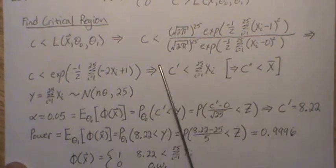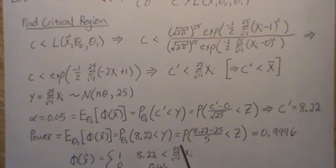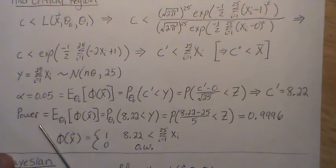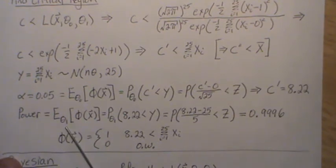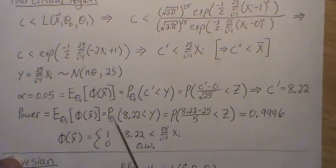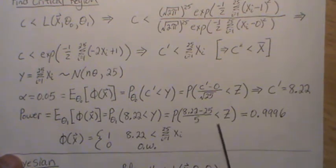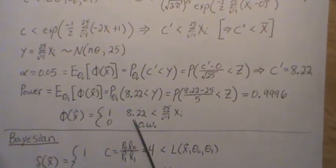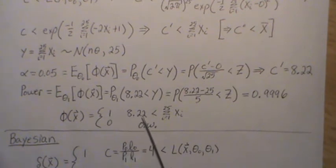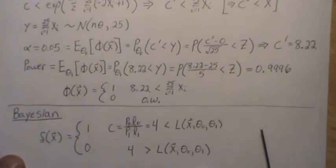Using z equal to 1.645, we can back-solve for C-prime. The rejection region is: if the sum of the x_i's is greater than 8.22, we reject. The power is the expected value of the test function under the alternative hypothesis — the probability that Y exceeds the critical value under the alternative. Standardizing to a z random variable gives a probability of 0.9996. So the test function is 1 if the sum exceeds 8.22, and 0 otherwise — this is the most powerful test.